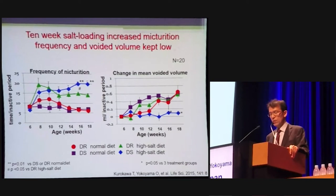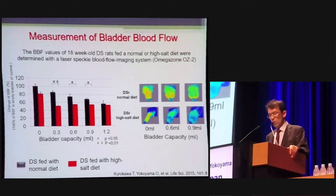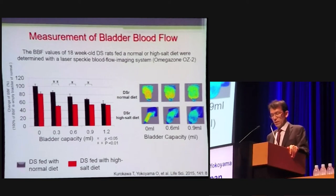Ten weeks of salt loading increased micturition frequency, and voided volume remained low. Bladder blood flow was determined with a laser speckle blood flow imaging system. Compared with DS rats fed a normal diet, bladder blood pressure was significantly decreased in DS rats fed a high-salt diet.